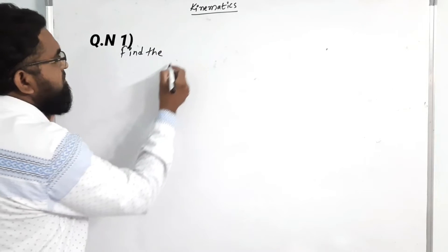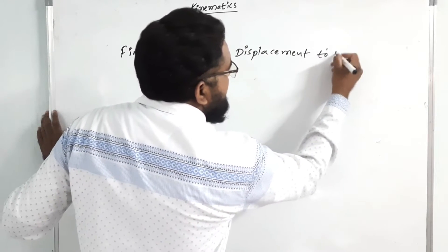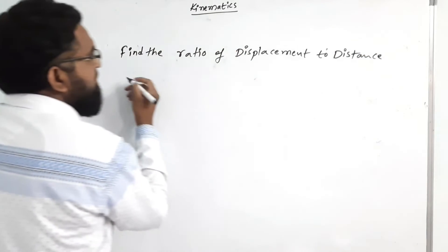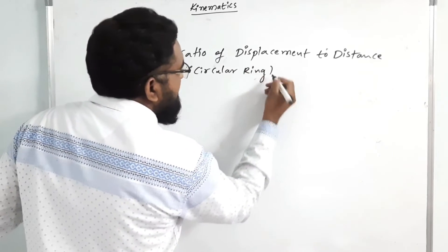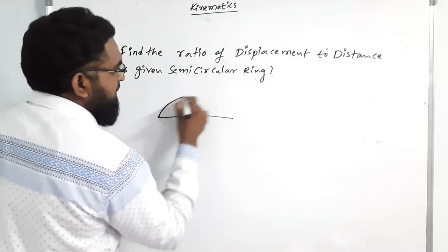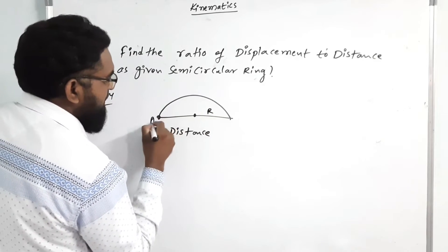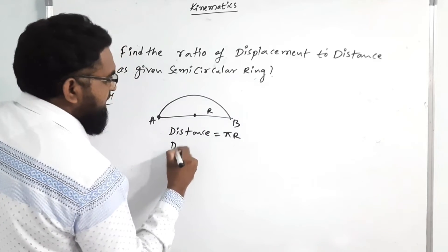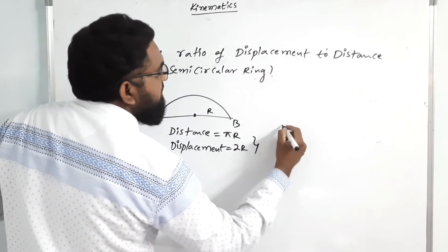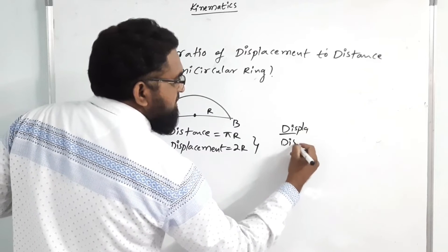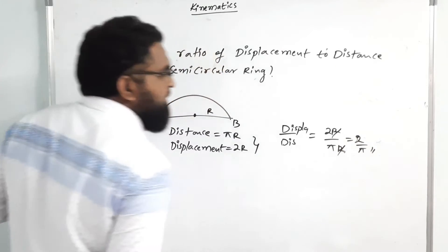Question: find the ratio of displacement to distance for a semicircular ring. Solution: distance = π × R; displacement = 2R. So displacement by distance = 2R / πR. R cancels, so the answer is 2/π.